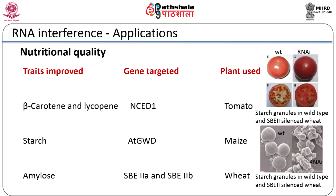RNAi technology has been used to improve various nutritional traits in plants. For example, obtaining tomatoes with higher lycopene and beta-carotene levels has been possible with this technology. 9-cis-epoxycarotenoid dioxygenase, a key enzyme in ABA biosynthesis, was suppressed using an RNAi construct driven by a fruit-specific E8 promoter. ABA accumulation and NCED1 transcript levels in the transgenic fruit were downregulated by over 50% compared to wild-type fruits. This led to diversion of carbon from the ABA biosynthesis pathway into the carotenoid pathway, resulting in increased accumulation of lycopene and beta-carotene.